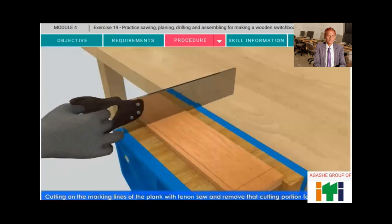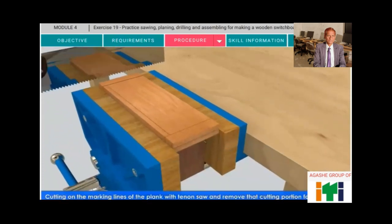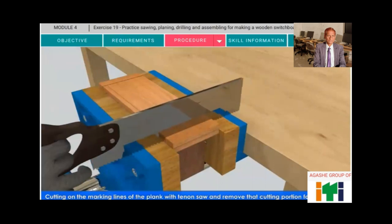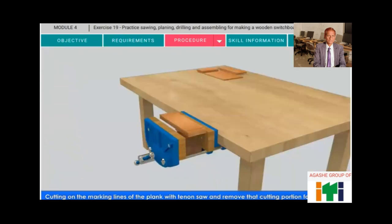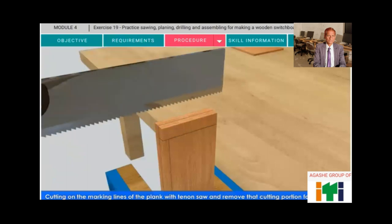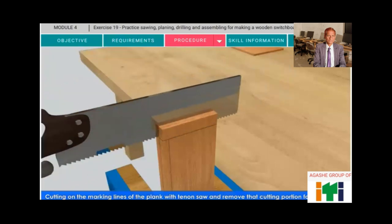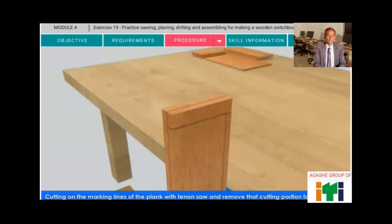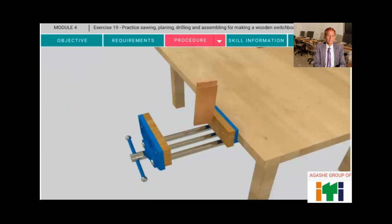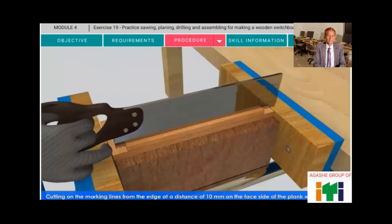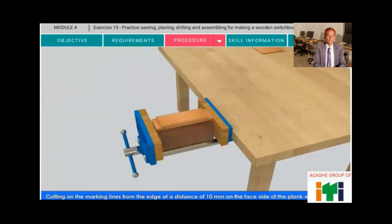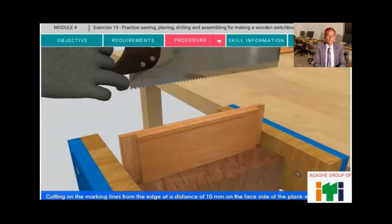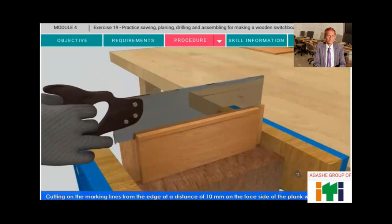Cutting on the marking lines of the plank with tenon saw and remove that cutting portion for making lap. Cutting on the marking lines from the edge at a distance of 10 mm on the face side of the plank with tenon saw.